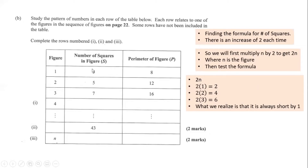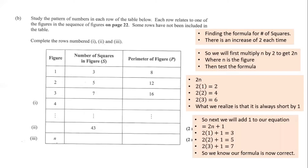For figure 1, the actual number of squares is 3 but we got 2. For figure 2, the actual is 5 but we got 4. For figure 3, the actual is 7 but we got 6. We're always short by 1, so if we add 1 to the equation we get 2n+1. Testing: 2(1)+1=3 ✓, 2(2)+1=5 ✓, 2(3)+1=7 ✓. So our formula is correct.